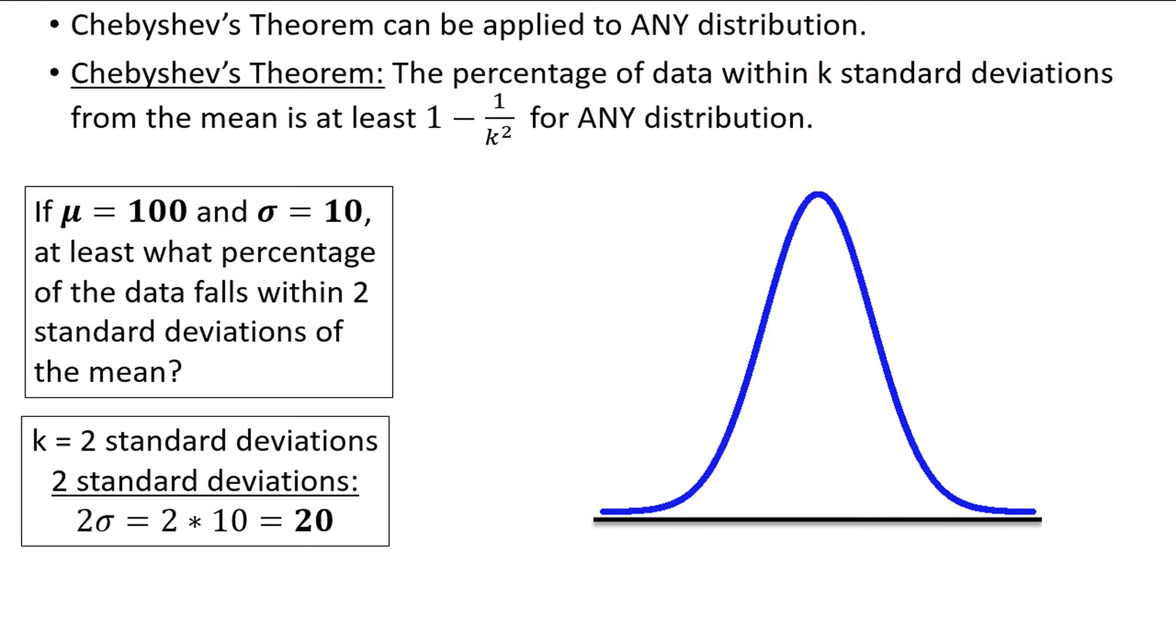Next, let's label the mean on our distribution. The mean is 100, which should fall somewhere in the middle of the distribution. Let's revisit the question. At least what percentage of the data falls within two standard deviations of the mean? The word within suggests on either side of the mean, either above or below.